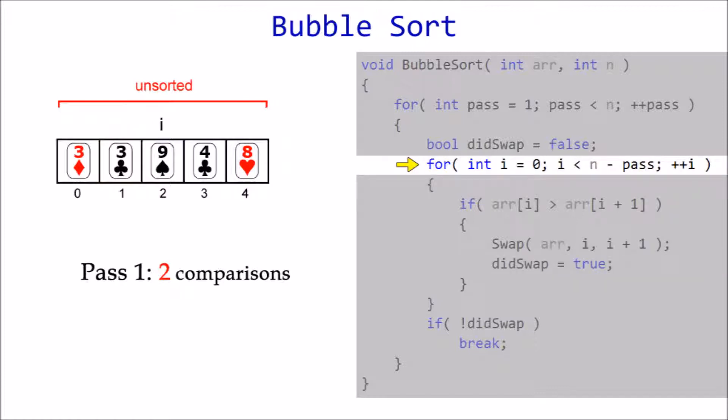Current index is now incremented to position two, where it's compared to its new neighbor, index three. Nine is greater than four, so they're swapped. Current is incremented to index three and is once again greater than next, so nine is swapped to index four.